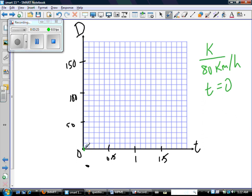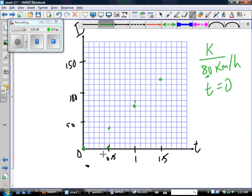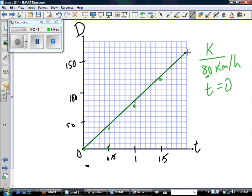So here's Kenji. Half an hour later, he's gone half an hour. So he's gone 40 kilometers. An hour later, 80 kilometers. An hour and a half, so another 40. So that's 120 total. So there's Kenji. And let's get a line drawn through those points as best we can.